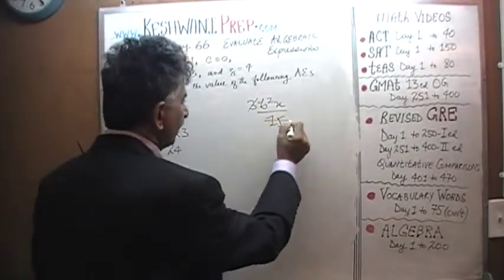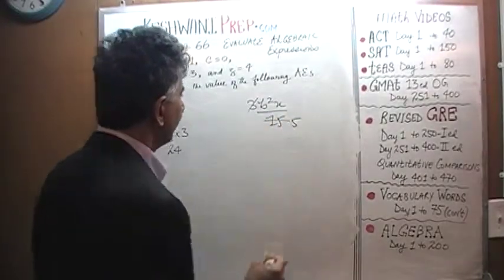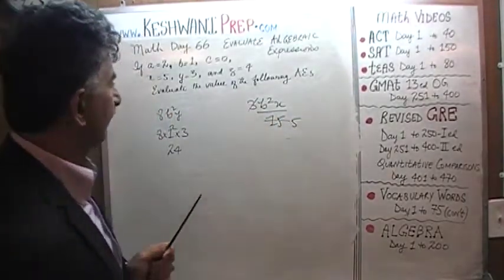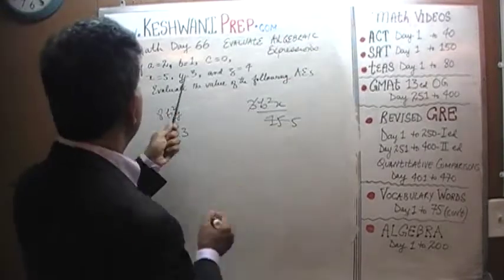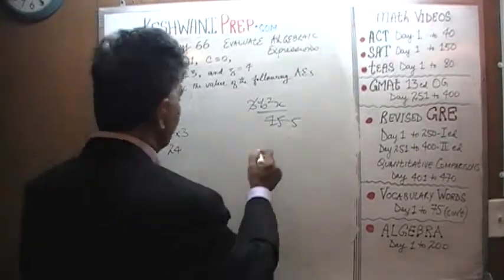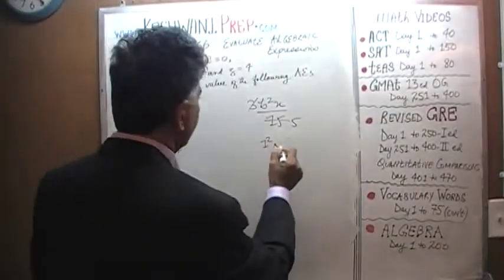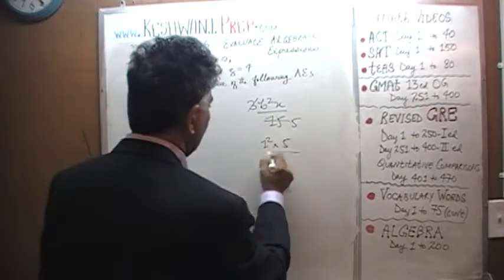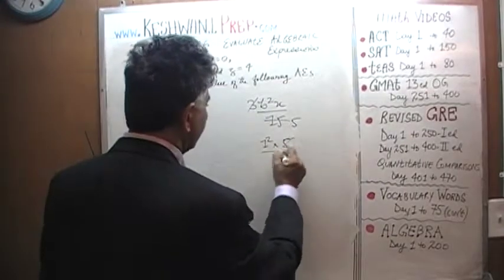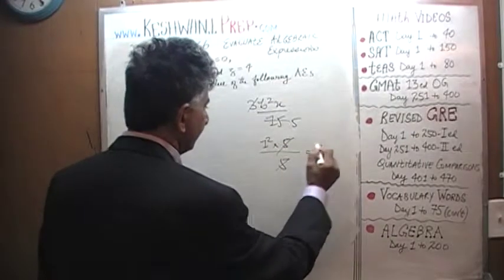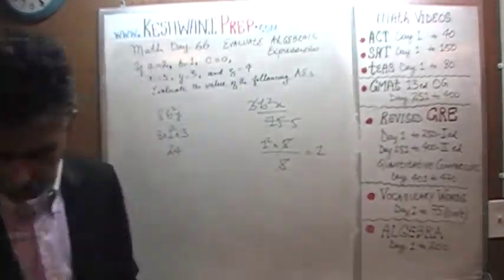For 3b squared x over 15, we can cross out the 3 with the 15, leaving 5. We have b squared which is 1 squared times x which is 5 over 5. The answer is just 1.